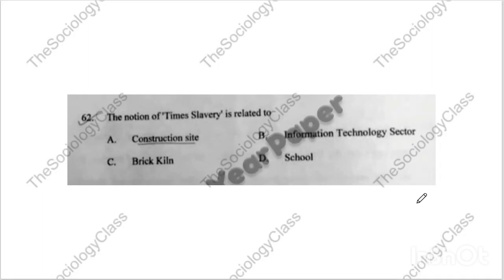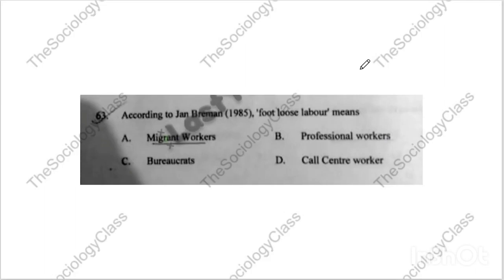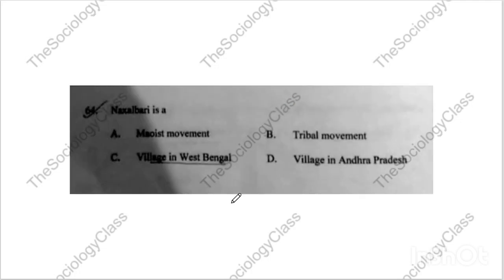Question number sixty-two: 'The notion of time slavery is related to what?' This is an NCERT question. The correct answer is B — IT sector. Remember, work in the IT sector is time-bound. Question number sixty-three: Jan Breman's 'footloose labour' — what does it mean? It means migrant worker. We have discussed this before. It seems they copied PYQs directly into the 2021 paper.